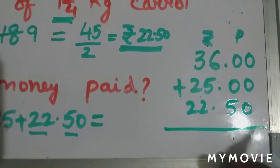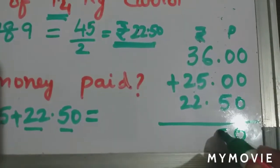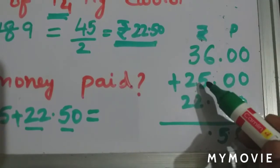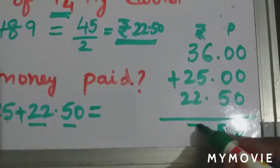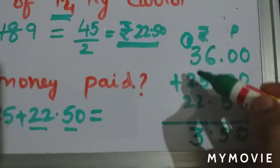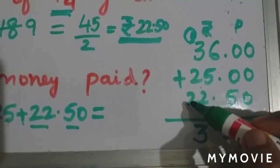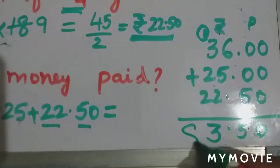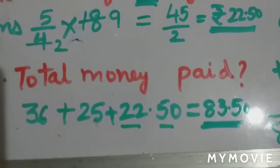Here you will get zero, you will be adding and get 5. 6 plus 5 is 11, 11 plus 2 is 13, 3 here and one carry. 1 plus 3 is 4, 4 plus 2 is 6, 6 plus 2 is 8. So your answer is 83 rupee 50 paise.